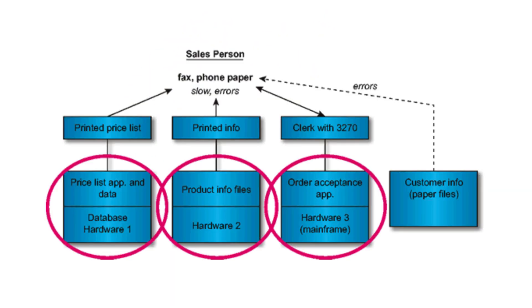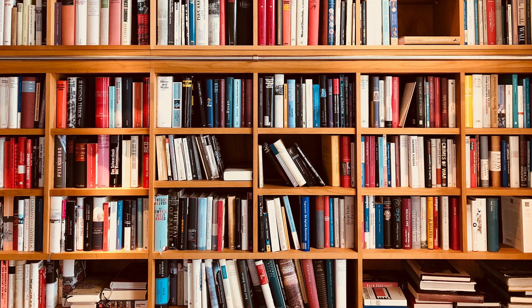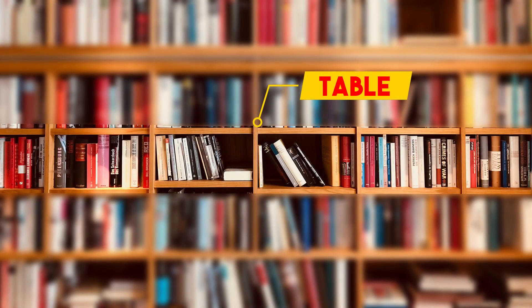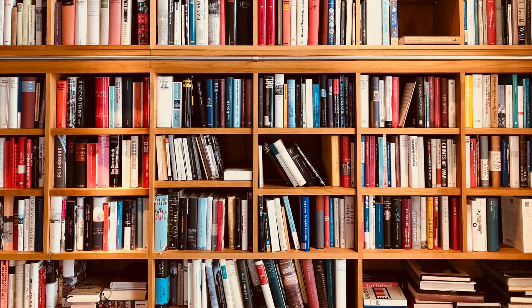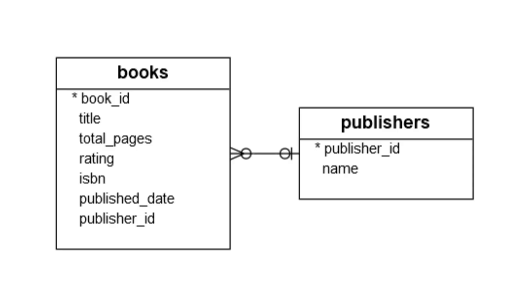Let's start by understanding the building blocks of a database. Picture your favorite library. Tables are like bookshelves, fields are the different sections on those shelves, and records are the books themselves. And just like every book has unique content, each field has a specific data type.